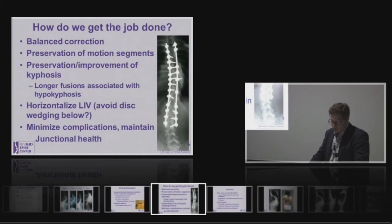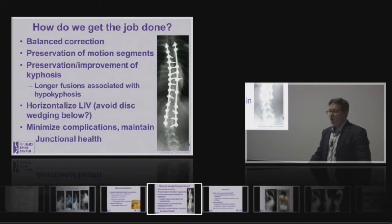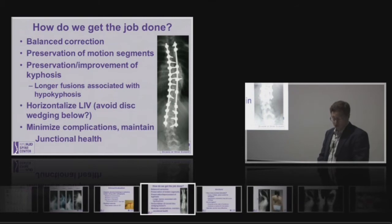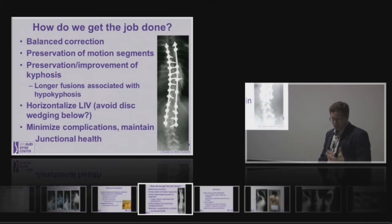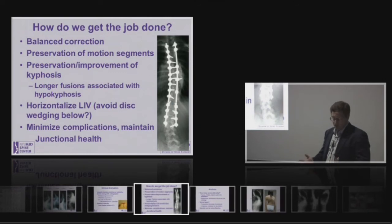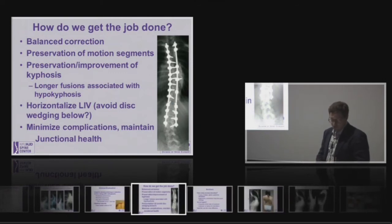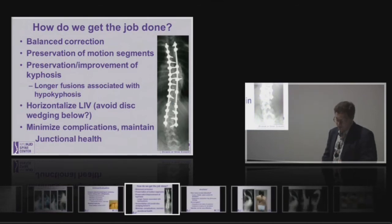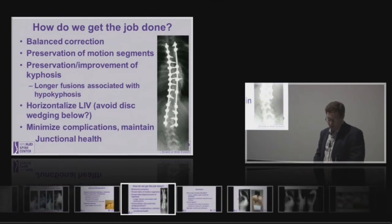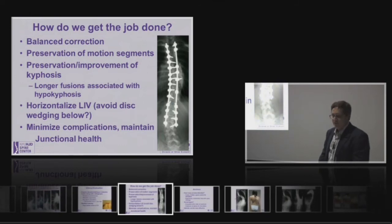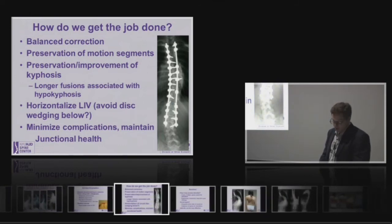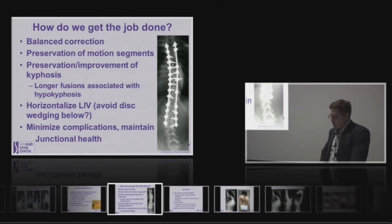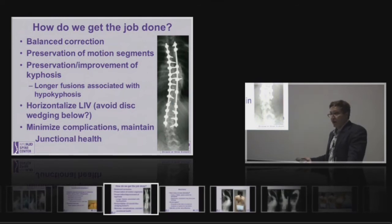We've talked about skeletal maturity already. The job we want to get done is to achieve balanced correction, preserve as many motion segments as possible, improve or preserve kyphosis. Longer fusions are associated with hypokyphosis. Horizontalizing the LIV is important, and we've talked about disc wedging. We certainly try to achieve those things in surgery, and we want to minimize complications and maintain the junctions for as long as possible — and I think some of that is going to be genetic.